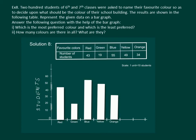Now let us read our question further. Answer the following question with the help of the bar graph. Which is the most preferred color and which is the least preferred color? And secondly, how many colors are there in all? What are they?